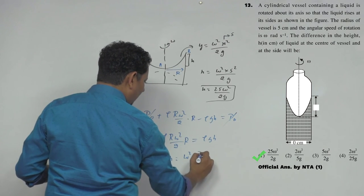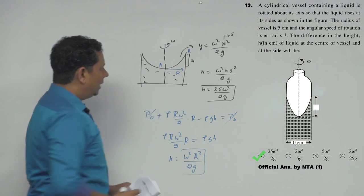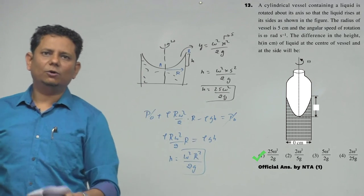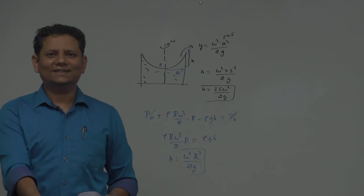And h value will be equal to ω²r²/2g, the same value. So you can directly use this formula as well. If you remember the formula, it always helps in solving the question. So option A is the right answer.